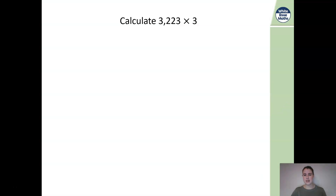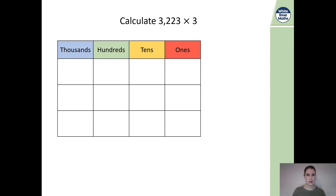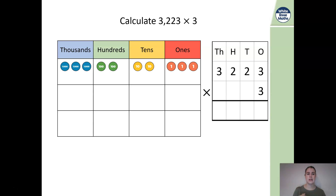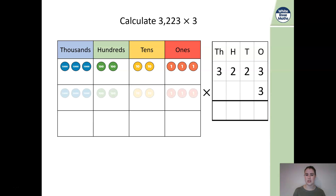Let's consider this question on the screen: calculate 3,223 by 3. Let's use our place value counters to help us. This is going to be our written calculation. Here's an example of our 1,000s, 100s, 10s, and 1s — this is 3,223 represented. However, we're multiplying this by 3, so we need 3 lots of it.